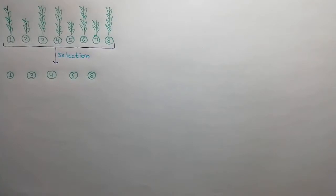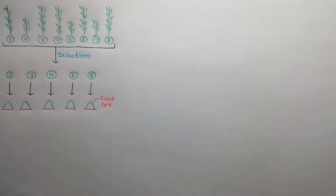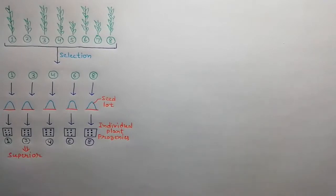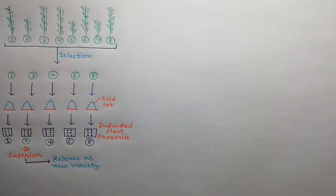Hence, we select plant number 1, 3, 4, 6, and 8 for further activities. Now collect the seeds from selected plants separately. We grow them separately and obtain individual plant progenies. Now we look for the most superior individual plant progenies — suppose we found number 3. Now release it as a new variety.